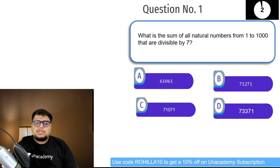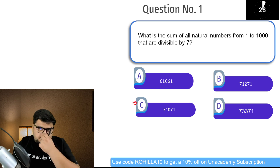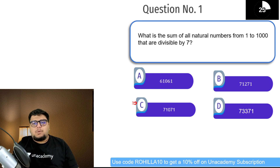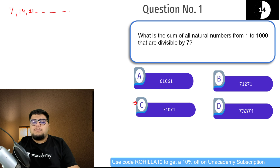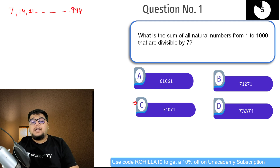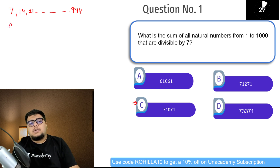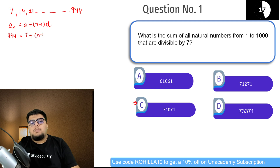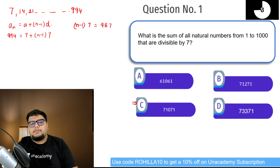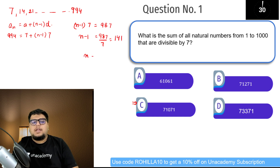A lot of people are saying option C. Let's check. सबसे पहला number जो 7 से divisible होगा वो 7 होगा, फिर 14, 21। Last number होगा 994 जो 7 से divisible है। इन सारे numbers की count निकालने के लिए nth term formula use करूंगा: a + (n-1)d। Nth term है 994, first term है 7, common difference भी 7। तो n-1 = 987/7 = 141, यानी n = 142।